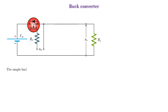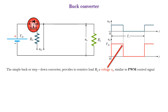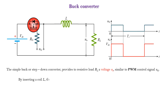The simple buck, or step-down converter, provides to a resistive load RL a voltage VO similar to the PWM control signal VG. By inserting a coil L, the voltage VO is smoothed out.